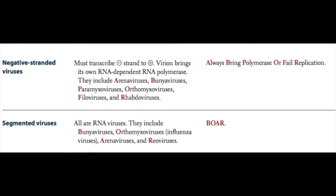As mentioned, negative-stranded viruses must have their negative-stranded genome transcribed into a positive or plus-stranded RNA in order to be translated by the host cell ribosome. To accomplish this, the virus brings its own RNA-dependent RNA polymerase when it infects a host cell. The negative-stranded viruses include arena viruses, bunya viruses, paramyxo and orthomyxo viruses, filoviruses, and rhabdoviruses. Remember the mnemonic: Always Bring Polymerase Or Fail Replication.